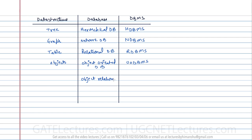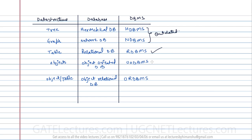ORDBMS uses objects as well as tables as its underlying data structures. Now, the hierarchical database management system and network DBMS are outdated — we don't use them anymore. In this subject, we are going to study relational database management system. Object and object-relational DBMS are relatively new but not widely used. RDBMS is widely used because it is very easy to understand and implement.